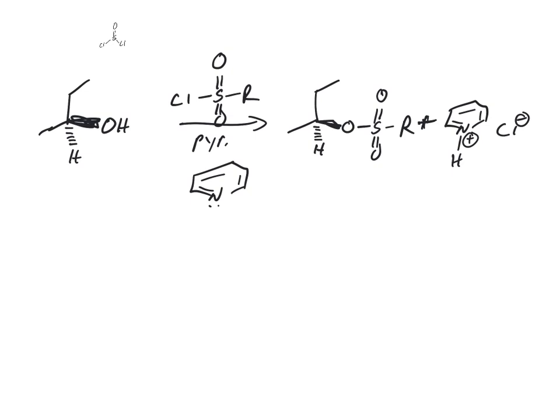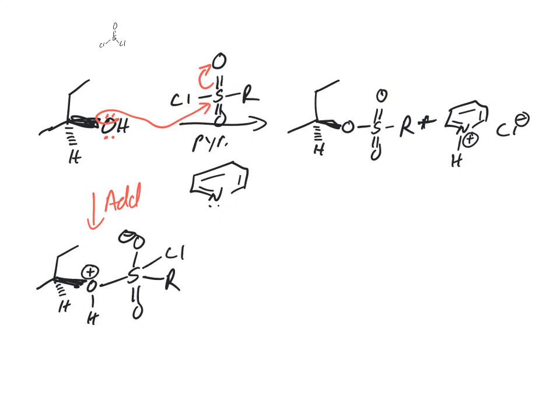First step: a lone pair on the oxygen attacks the sulfur. We're going to add in. It's not exactly like a carbonyl, but a similar type of mechanism. We're doing an addition reaction. It's not exactly a tetrahedral intermediate, but there's a leaving group there. Chlorine's sitting there. Let's break that down. That's an elimination reaction. So an addition-elimination reaction mechanism we've seen.